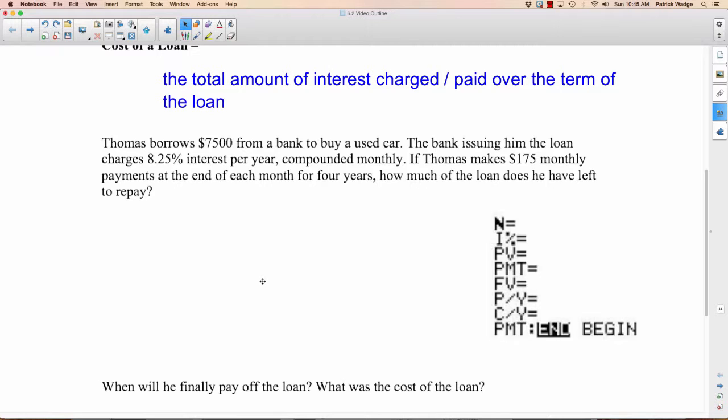Let's do a few examples. Thomas borrows $7,500 from a bank to buy a used car. Let's do some highlighting. The bank issuing him the loan charges 8.25% interest per year, compounded monthly. If Thomas makes $175 monthly payments at the end of each month for four years, how much of the loan does he have left to repay?